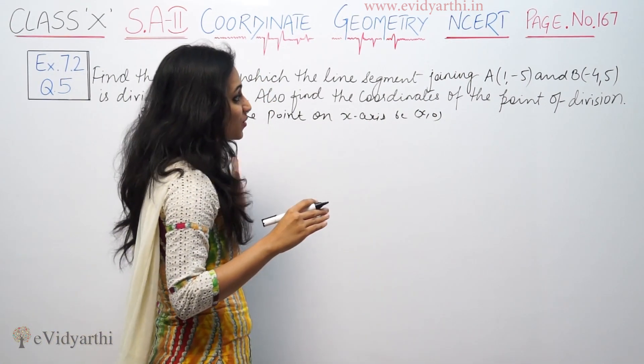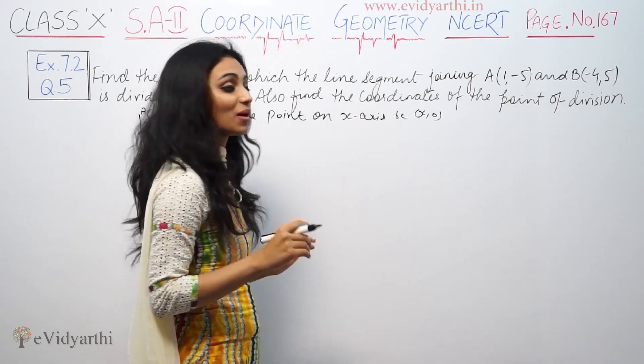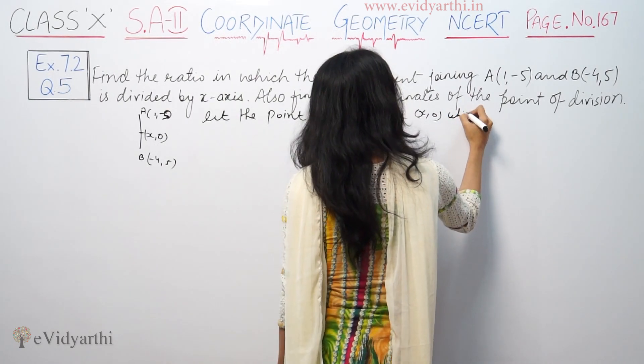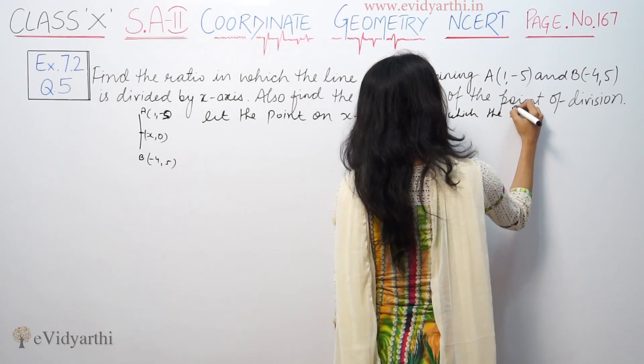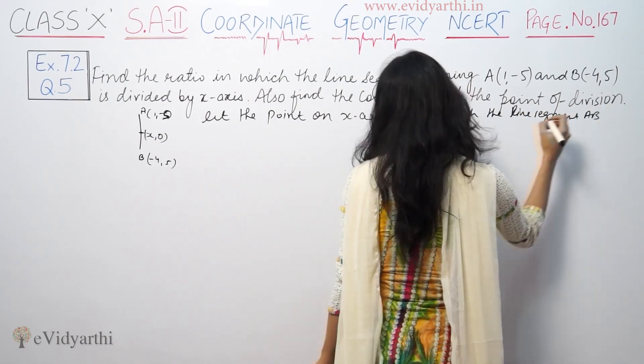The point divides the line segment and we don't know the ratio. Let's say it divides the line segment AB in the ratio k:1.